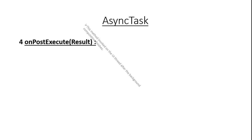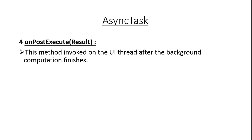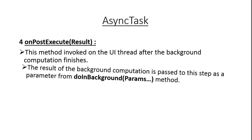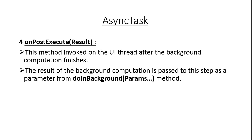Here is the last method inside AsyncTask: onPostExecute. This method is invoked on the UI thread after the background computation finishes. After finishing the job within doInBackground, the system calls onPostExecute and returns the result into this method. The result of the background computation is passed to this step as a parameter from the doInBackground method.